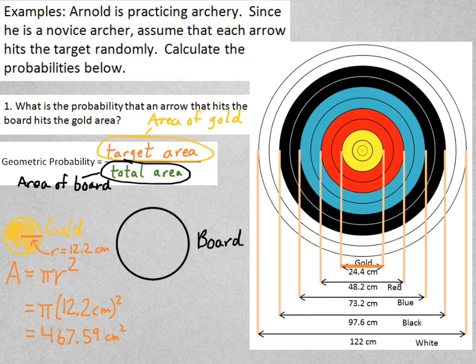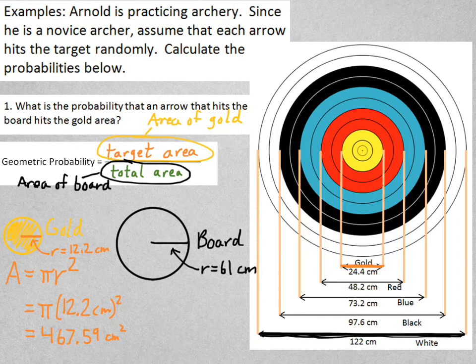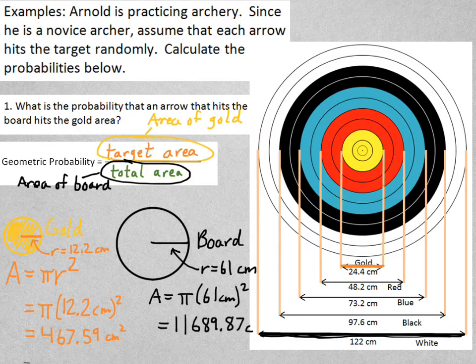Now I need to find the area of the board. The board has a diameter of 122 centimeters. So the radius is 61 centimeters. If I do pi r squared again, pi times 61 squared, I would get an area of 11,689.87 centimeters squared.